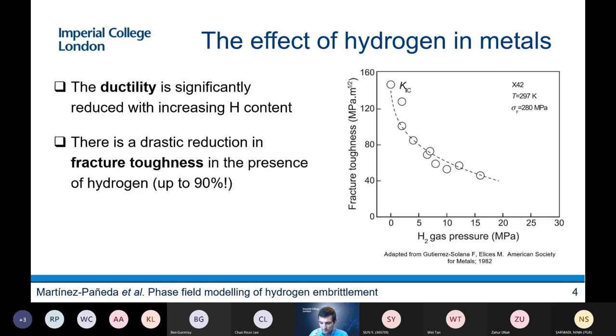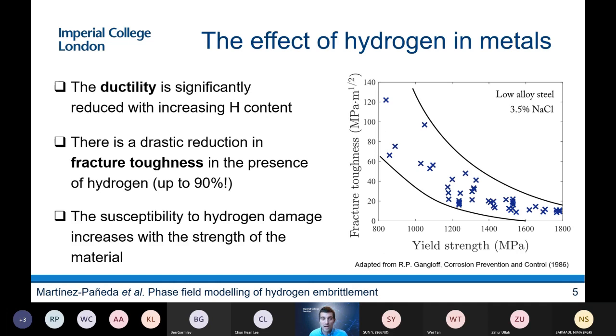For a high-strength steel, you can see a reduction by 90% of the fracture toughness. And this is a very important point to emphasize. The susceptibility to hydrogen damage increases with the strength of the material. You can see here the fracture toughness for a fixed concentration of hydrogen in an environment that mimics seawater. And you can see how as you increase the yield strength, the toughness goes down drastically up to the point that it goes below 10 MPa square meter, so almost like a ceramic. And this is a really important point because what this is telling us is that, first, hydrogen is compromising decades of metallurgical research. We have developed high-performance materials, but we cannot use them.